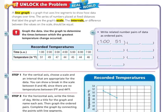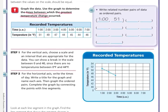Now let's look at the unlock the problem. It says to graph the data and use the graph to determine the times between which the greatest temperature change occurred. If we underline what we're being asked to find, we're looking for the greatest temperature change and between which times. Before we can plot our points, we need our ordered pairs. The x-coordinate is going to be the time, because that's the horizontal axis, and the temperature will be the y-coordinate. Press pause and write down all the information from the table as ordered pairs.